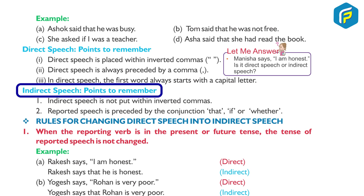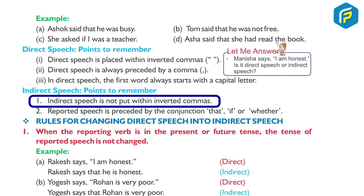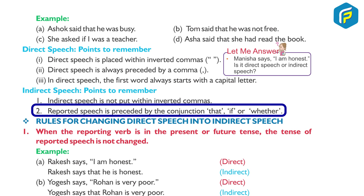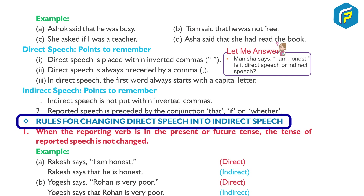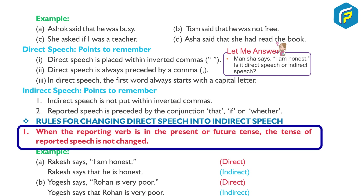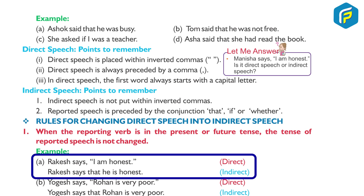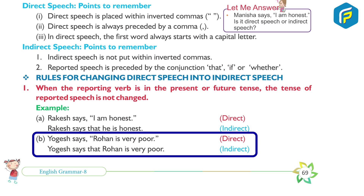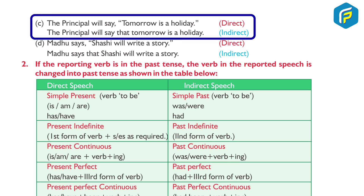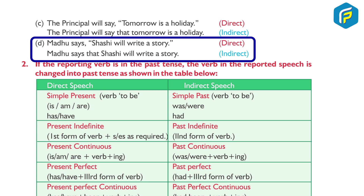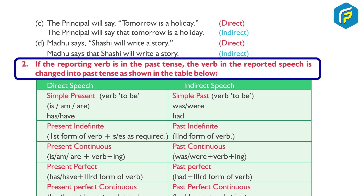Indirect speech points to remember: one, indirect speech is not put within inverted commas; two, reported speech is preceded by the conjunction 'that', 'if', or 'whether.' Rules for changing direct speech into indirect speech. Rule one: when the reporting verb is in the present or future tense, the tense of the reported speech is not changed. Examples: (a) Rakesh says, 'I am honest' becomes Rakesh says that he is honest. (b) Yogis says, 'Rohan is very poor' becomes Yogis says that Rohan is very poor. (c) The principal will say, 'Tomorrow is a holiday' becomes The principal will say that tomorrow is a holiday.